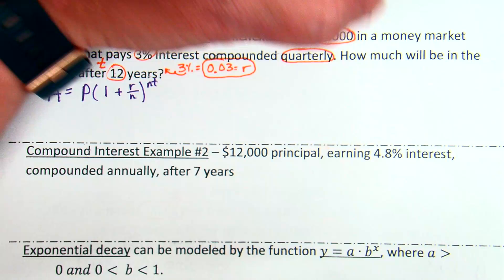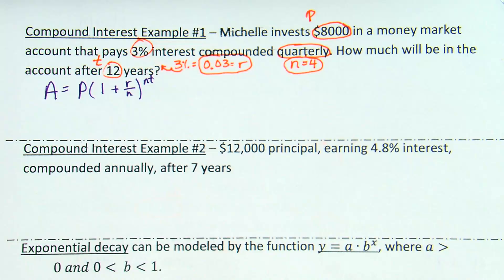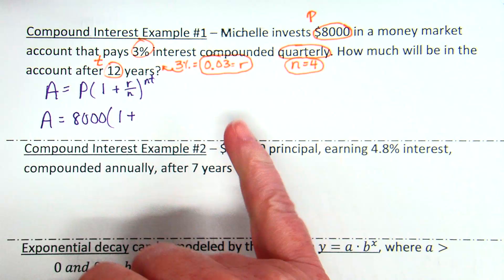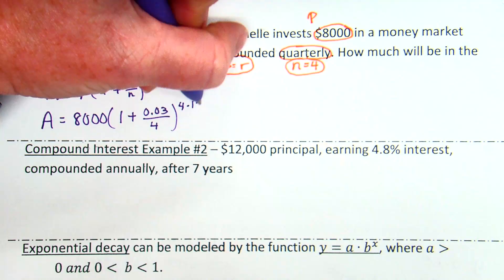Okay. So, we have all of our information. Let's put it in the formula. So, I'm going to write it all out. A equals P. What was P? 8,000. 1 plus R, 0.03 divided by N, which is 4, raised to the NT. So, 4 times 12. Okay. That's kind of the basic setup that you're going to have to have to do this problem.